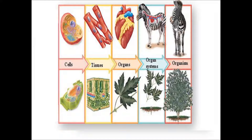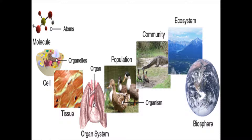In complicated organisms, the organ systems, organs, and tissues are complex. Interestingly, the organization in biological systems does not stop at the level of the organism. Several organisms form a population, several populations form a community, several communities form an ecosystem, and several ecosystems together form a biosphere.